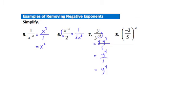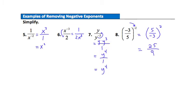Example 8 has a fraction inside parentheses raised to a negative exponent. To remove the negative exponent, take the reciprocal of everything inside the parentheses. The fraction was negative 3 fifths, so flipping gives 5 over negative 3, squared. Now square each factor: 5 squared gives 25, and negative 3 squared gives positive 9 — since negative 3 times negative 3 equals 9. The final answer is 25 over 9.